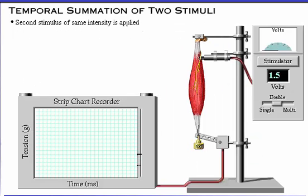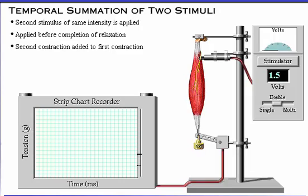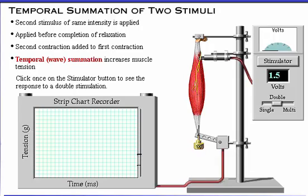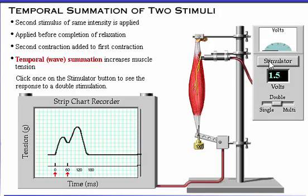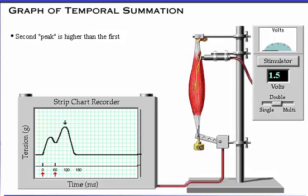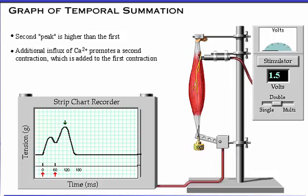When a second stimulus of the same intensity is applied to a muscle before the completion of the relaxation period, a second contraction occurs, adding its effect to the contraction resulting from the first stimulus. This is known as temporal summation, or wave summation, and results in increased muscle tension. Notice that the second peak is higher than the first. Since the muscle is already partially contracted from the first stimulus, the additional influx of calcium ions promotes a second contraction, which is added to the first contraction.